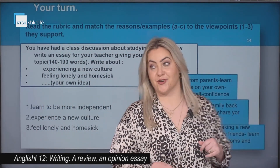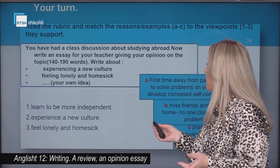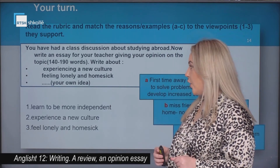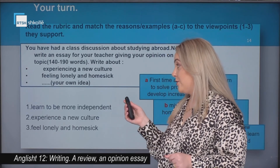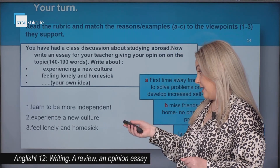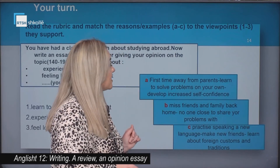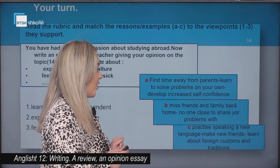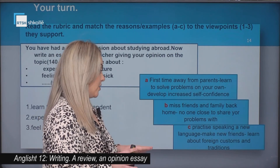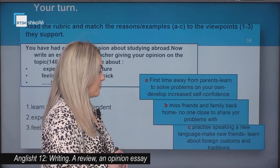Now it is your turn. Read the rubric and match the reasons and examples to the viewpoints one to three that they support. You have had a class discussion about studying abroad. Now write an essay for your teacher giving your opinion on the topic. Write about: experiencing a new culture, feeling lonely and homesick, or your own idea. Viewpoints: one — learn to be more independent; two — experience a new culture; three — feel lonely and homesick. Reasons/examples: A — first time away from parents, learn to solve problems on your own, develop increased self-confidence. B — miss friends and family back home, no one close to share your problems with. C — practice speaking a new language, make new friends, learn about foreign customs and traditions.